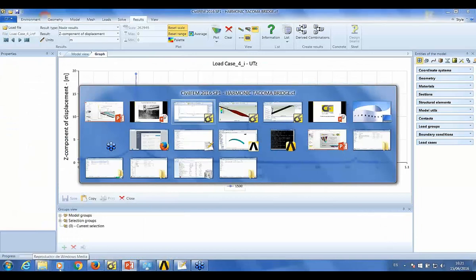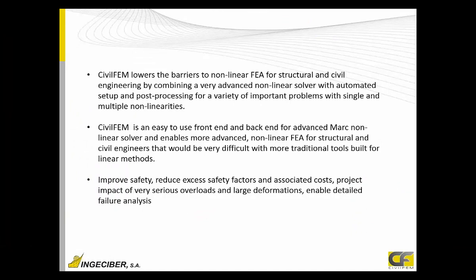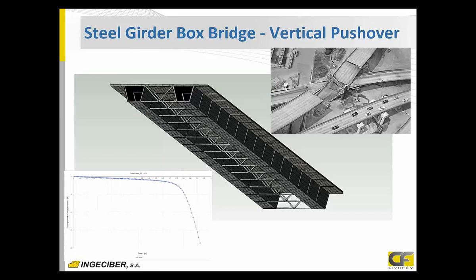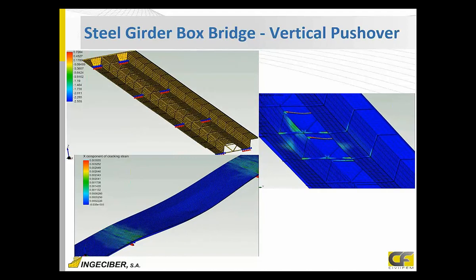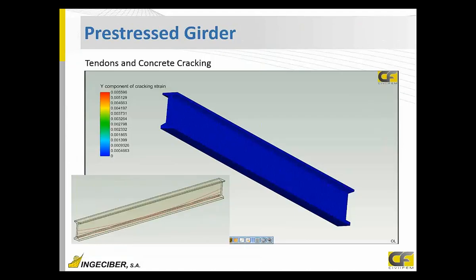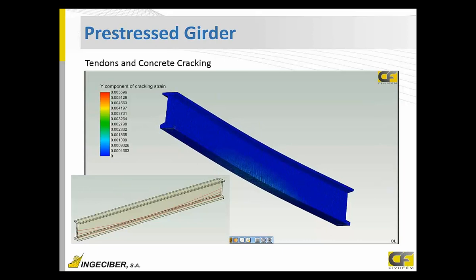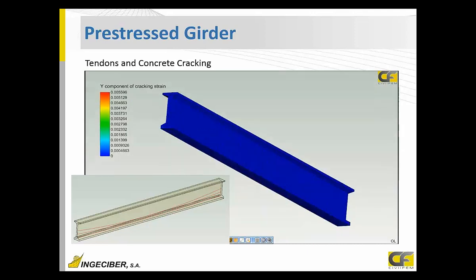Continuing with other examples beyond linear analysis, we can show a vertical pushover — applying a vertical load until final collapse due to cracking of the slab at supports and plasticity in the steel stiffener parts. Another nonlinear analysis can study cracking strains in a prestressed girder with tendons inserted inside the concrete structure, showing how cracks develop internally.